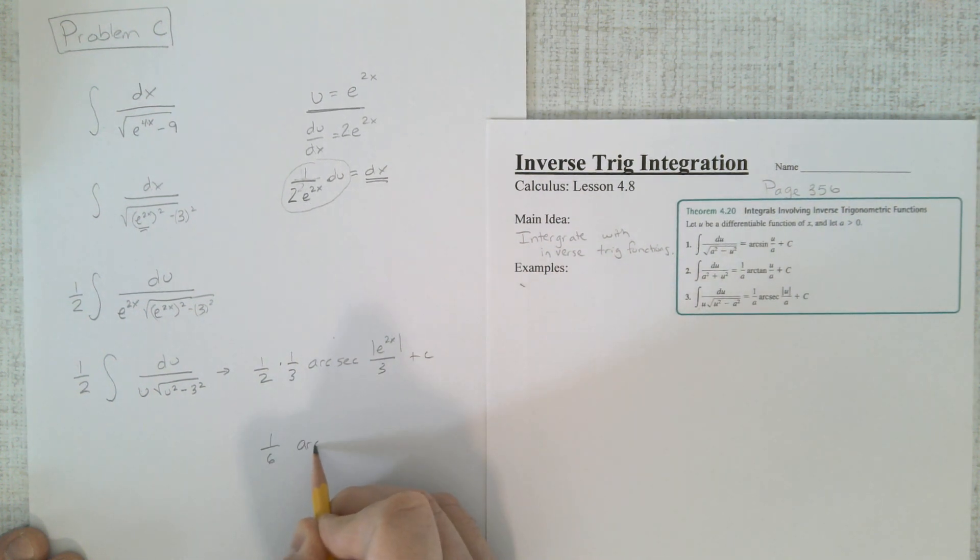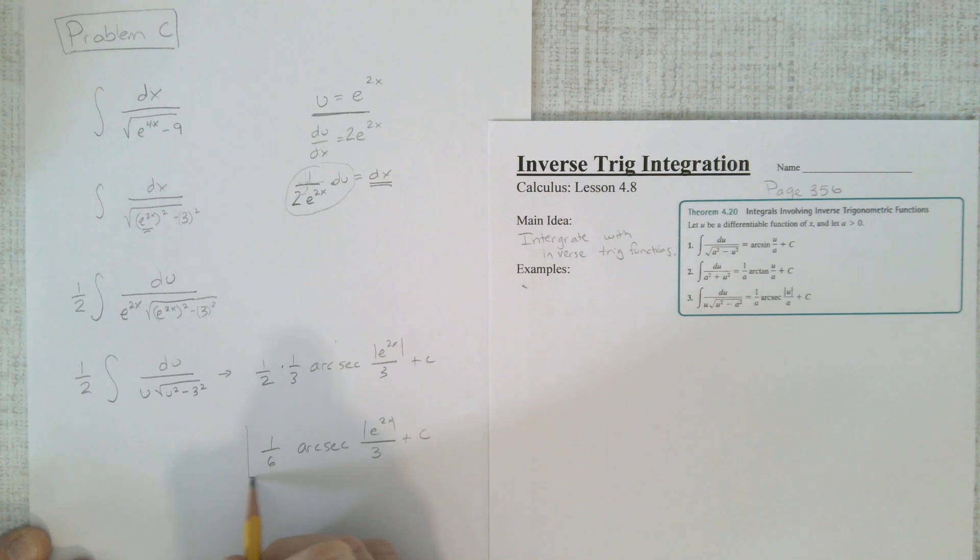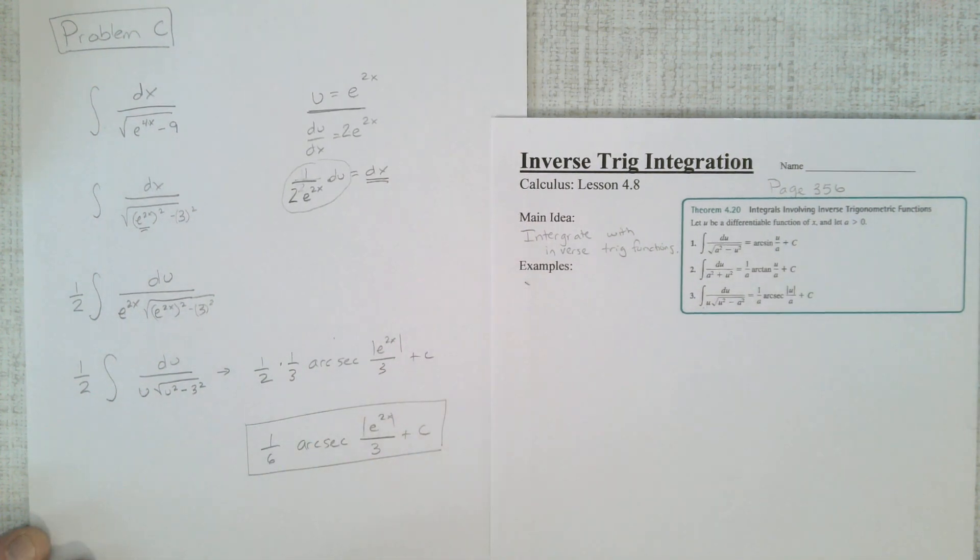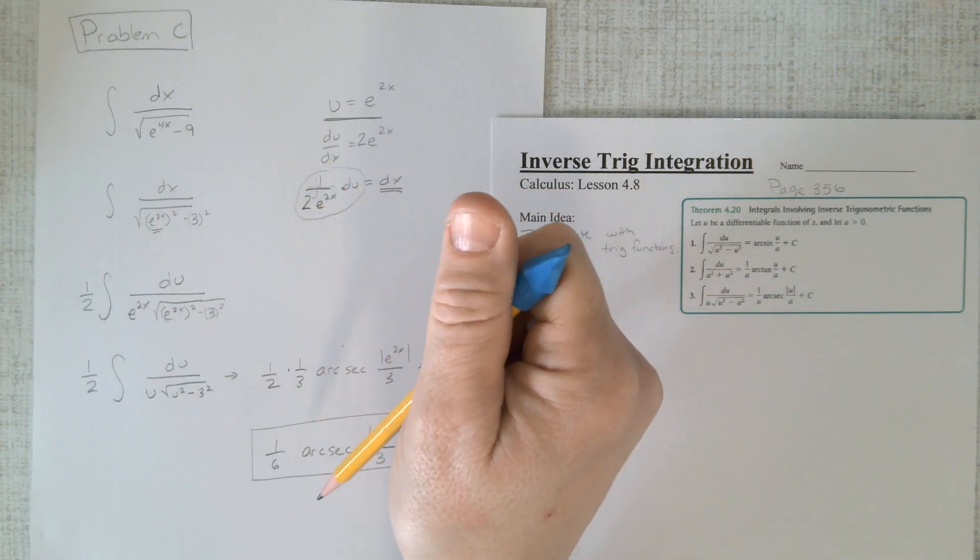1/6, arc secant e to the 2x over 3 plus c. It's a lot of steps. That's as hard as they get for this chapter. Congratulations. You made it to the end of the chapter. This is the hardest one we have to do. But again, try to get them to these.